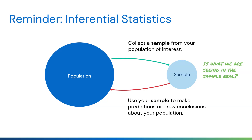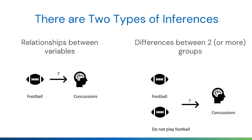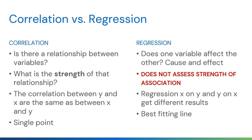There are two types of inferences. The first is relationships between variables — for example, the relationship between participating in football and the incidence of concussions. We can also look at differences between people who participate in football versus those who do not and their incidence of concussions. We need more sophisticated statistical tests beyond t-tests, chi-squares, and ANOVA to examine these inferences.